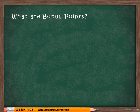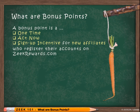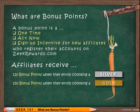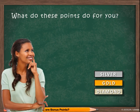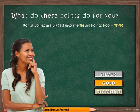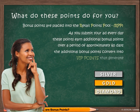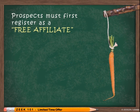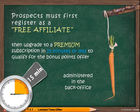A bonus point is a one-time, act-now sign-up incentive for new affiliates who register their accounts on ZeekRewards.com. Affiliates receive 110 bonus points when they enroll choosing a silver PAC subscription, 150 bonus points for a gold PAC, and 200 points for a diamond PAC. Bonus points are placed into the Retail Points Pool, or RPP. As you submit your ad every day, these bonus points earn additional bonus points, and over approximately 60 days the additional bonus points convert into VIP points that generate daily cash rewards. Note that prospects must first register as a free affiliate, then register to a premium subscription within 15 minutes or less to qualify for the bonus points offer.